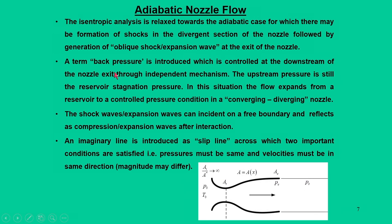This concept introduces a term called back pressure — a pressure controlled downstream of the nozzle exit through independent mechanisms, allowing us to increase or decrease pressure and regulate the flow without touching the upstream reservoir pressure. In this situation, flow expands from a reservoir to a controlled pressure condition in a converging-diverging nozzle. Shock waves and expansion waves can incident on a free boundary and reflect as compression or expansion waves after interactions.